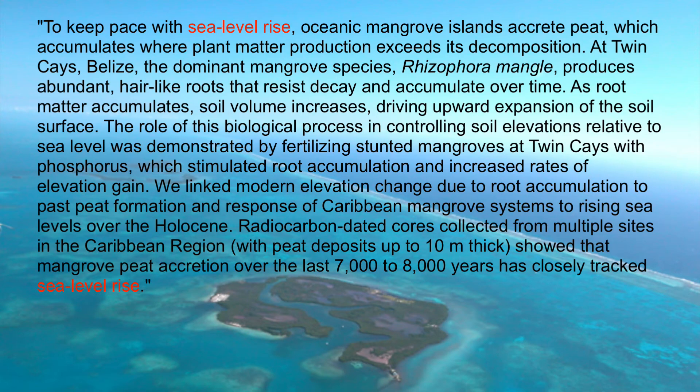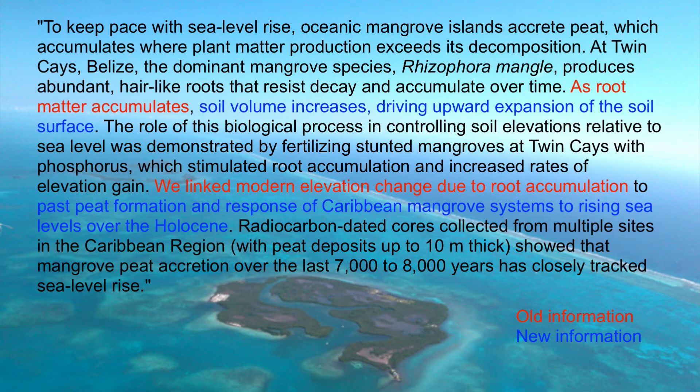The paragraph now flows much better because the information has been rearranged in a story arc. It's also better because each sentence is structured so as to enhance the reader's comprehension. Go through the paragraph again and note how in each sentence old information is given first, linking backwards to the previous sentence, and new information is given at the end of the sentence or after the reader has been prepared for it.